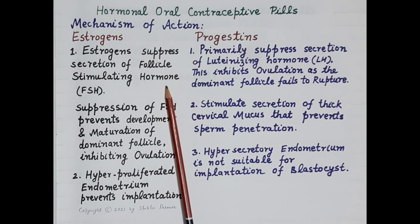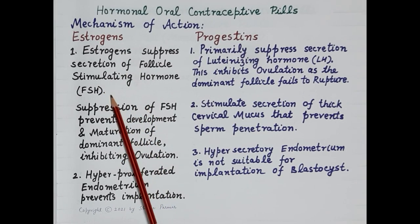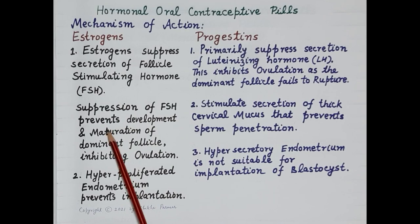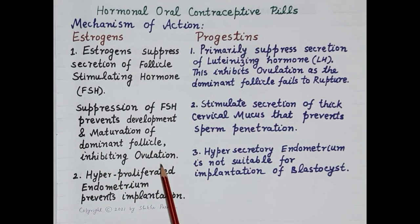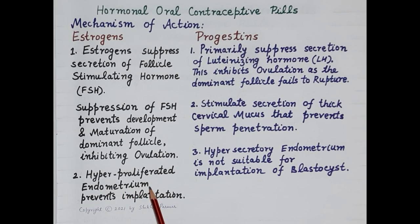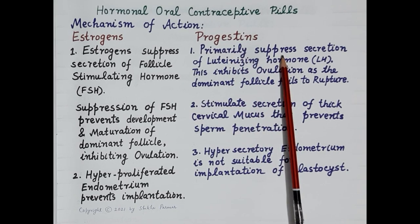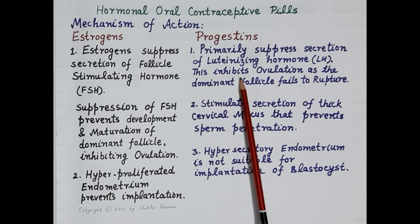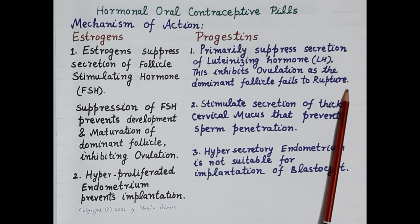Regarding the mechanism of action of hormonal oral contraceptive pills: estrogens suppress secretion of FSH, and suppression of FSH prevents development and maturation of the dominant follicle, thereby inhibiting ovulation. Estrogen also causes hyperproliferation of the endometrium, and a hyperproliferated endometrium prevents implantation. Progesterone primarily suppresses secretion of LH, inhibiting ovulation as the dominant follicle fails to rupture in the absence of LH.